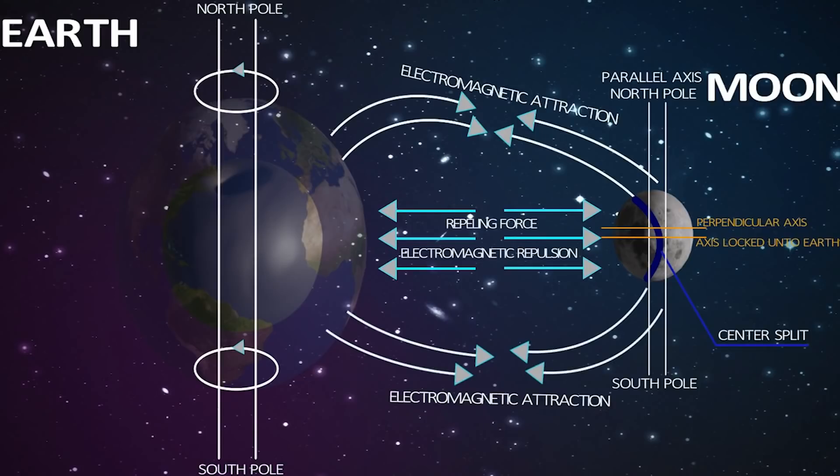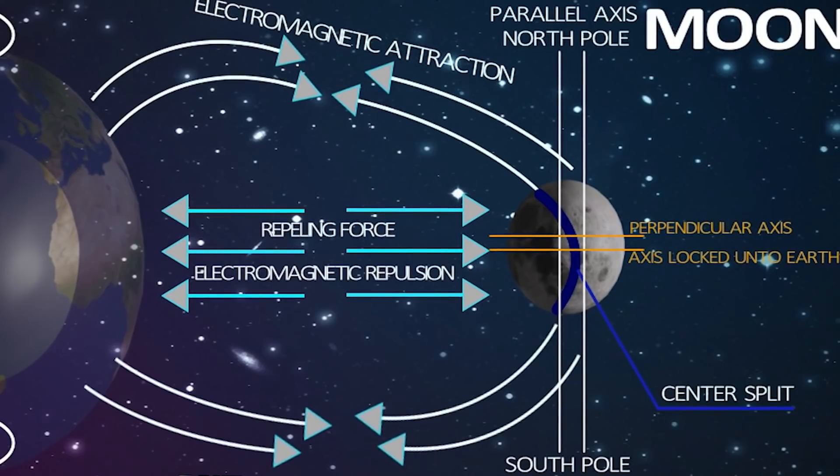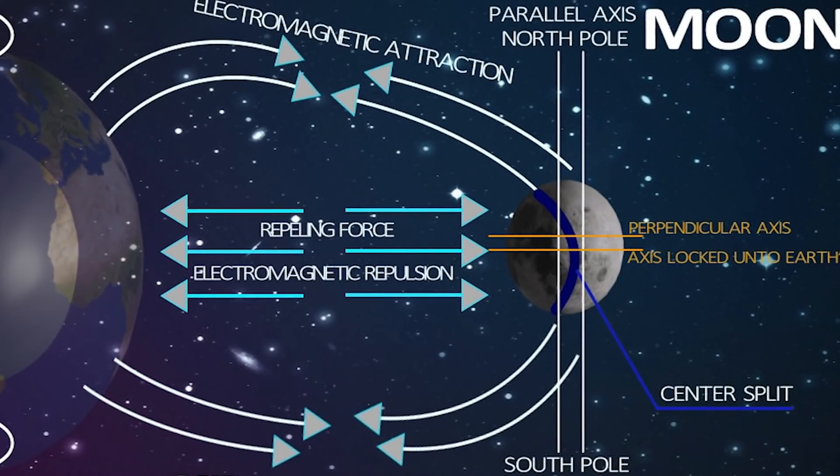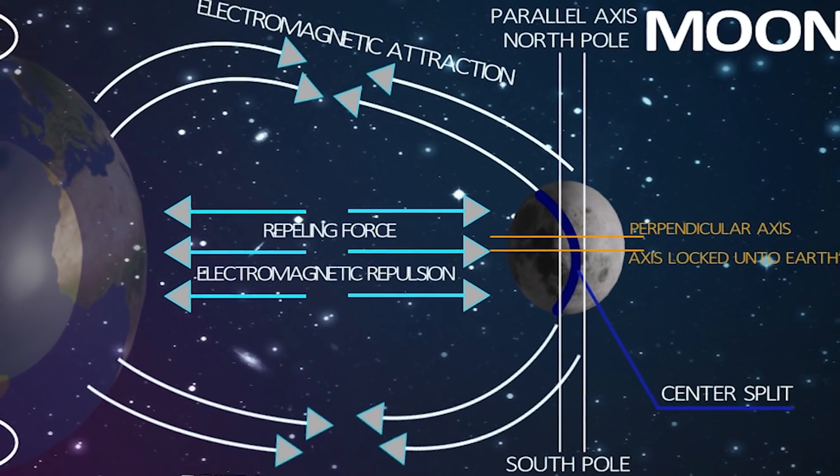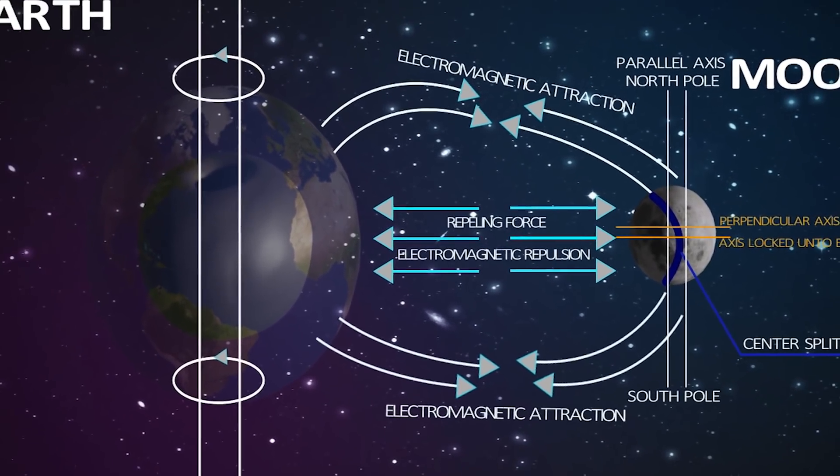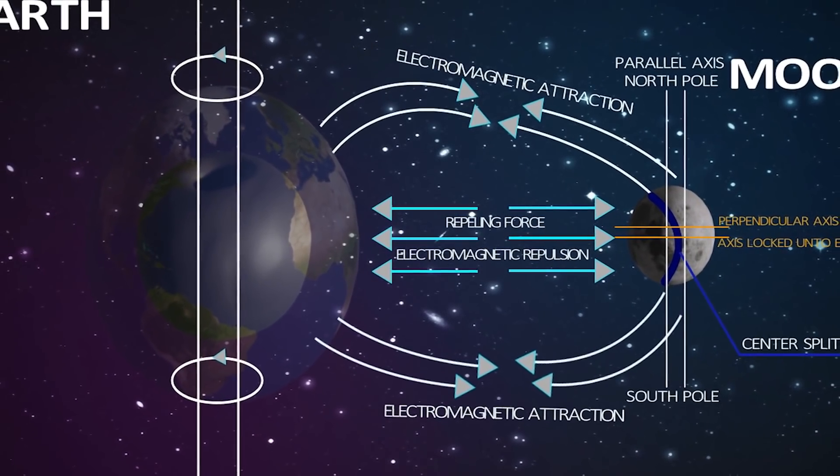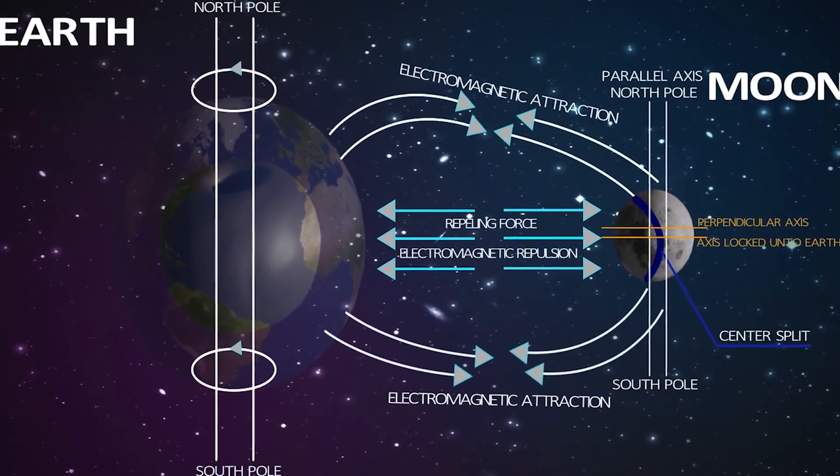Earth's moon has two axes. A north-south vertical pole axis in parallel to earth's magnetic poles, locked onto earth's north and south polarities. And earth is also locked in parallel on the solar system polarity, similar to the other planets in our solar system.